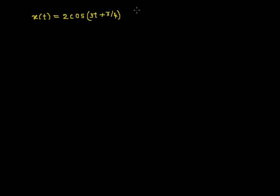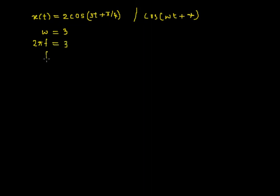To begin with, we will compare this with the standard signal cosine of (ωt + φ), where ω is the angular frequency and φ is the phase angle. Comparing these two, I can write ω = 3, and I know that ω = 2πf = 3. Therefore f = 3/(2π) hertz, and from this the time period T = 1/f = 2π/3.